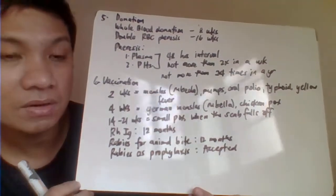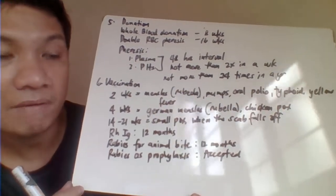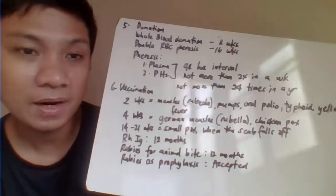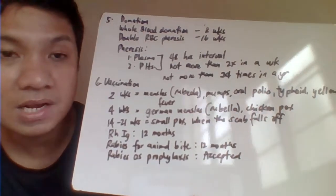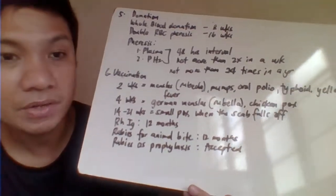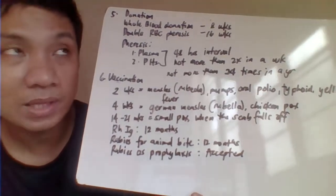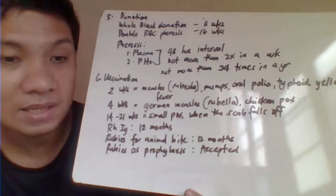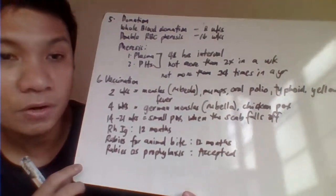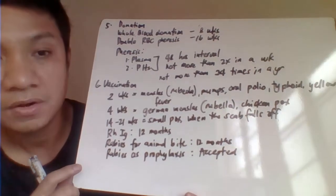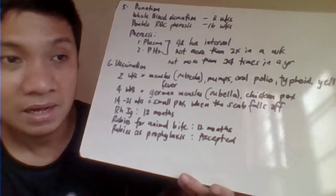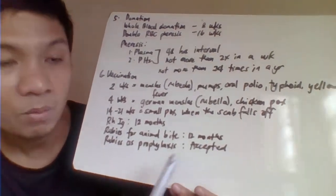For vaccinations: 2-week deferral for measles, rubella, mumps, oral polio vaccine, typhoid fever, and yellow fever. 4 weeks for German measles (rubella) and chicken pox. 4 to 21 days for smallpox until the scab has fallen off. RH immunoglobulin requires a one-year deferment. Anti-rabies given because the patient was bitten by a dog or animal also requires a one-year deferment.